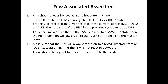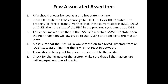There should be a grant for every request sent to the arbiter, and the last assertion is to check for the fairness of the arbiter — that is, to make sure that all the masters are getting an equal number of grants. These two slides show what the requirements of the circuit are and what assertions will be placed there to verify that the circuit is functioning correctly.